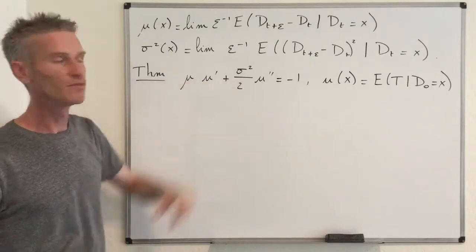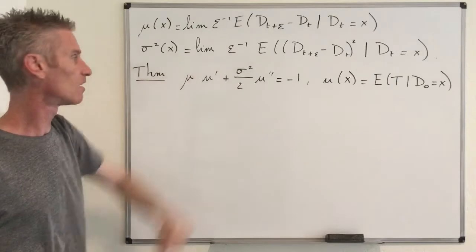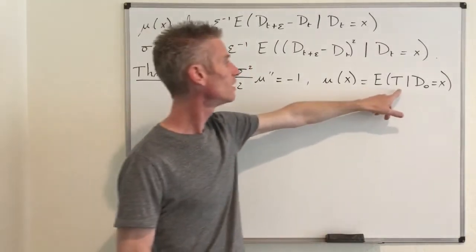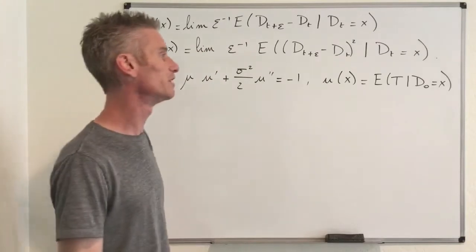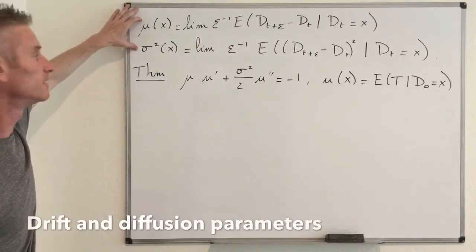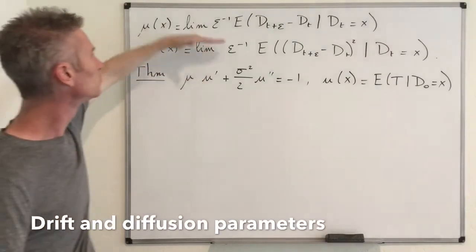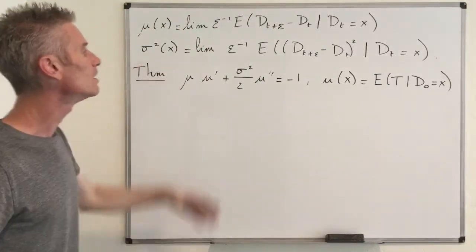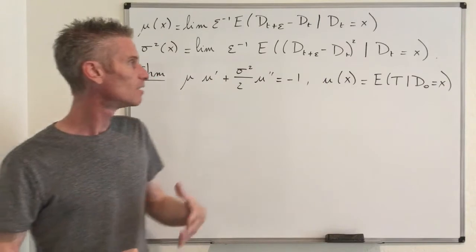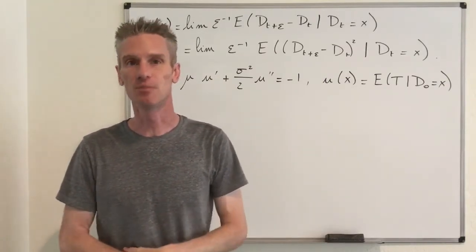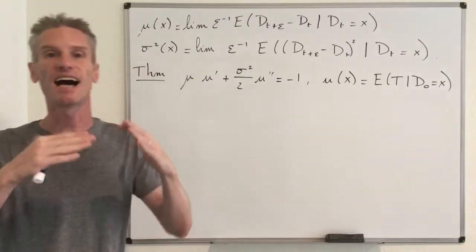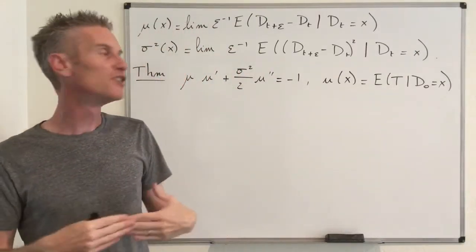On the board I rewrote the differential equation: μ(x)·u′(x) + (σ²(x)/2)·u″(x) = −1, where u(x) is the expected fixation time starting from fraction x of type 1 individuals. I also remind you of the definitions of the drift and diffusion parameters, since they appear in the proof. The key idea of the proof uses a basic property of conditional expectation and then a Taylor expansion around point x.